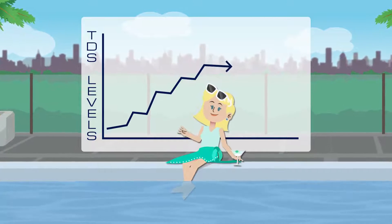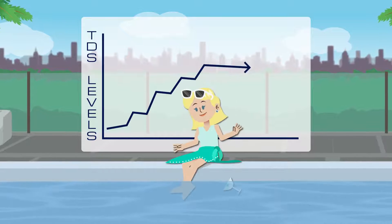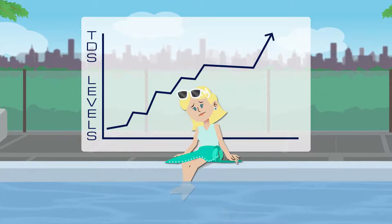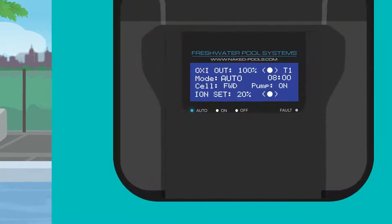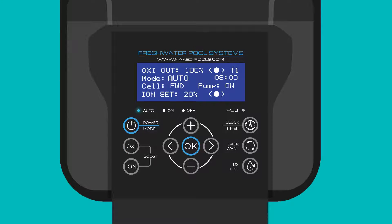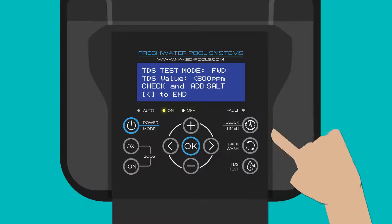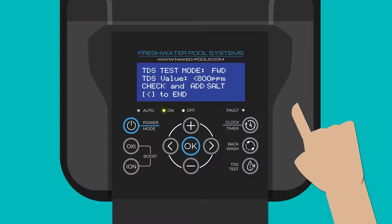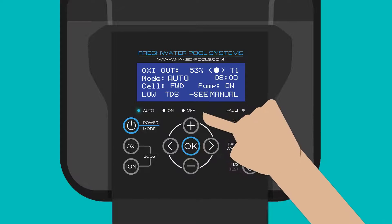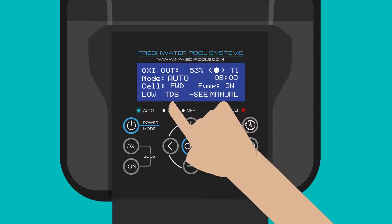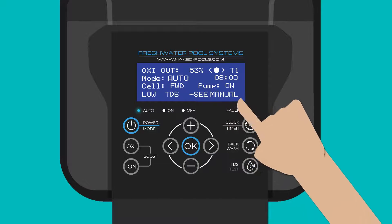That includes sunscreen, body oils, and other mysterious fluids. Lucky for you, the Naked system has a built-in TDS meter that measures the levels in the water. It can be checked by pressing the TDS test button on your control unit. If the levels are very high or low, you will see a warning on the LCD screen.